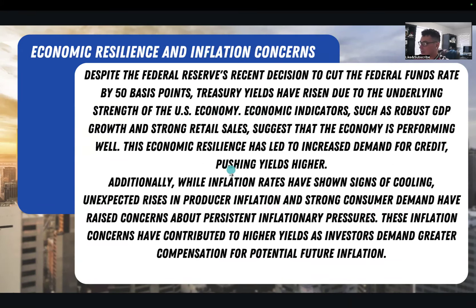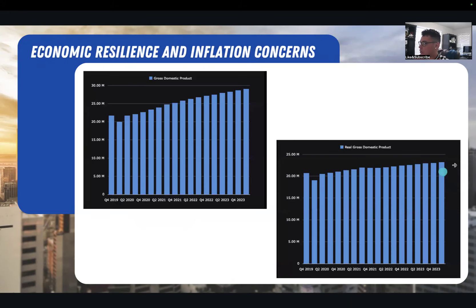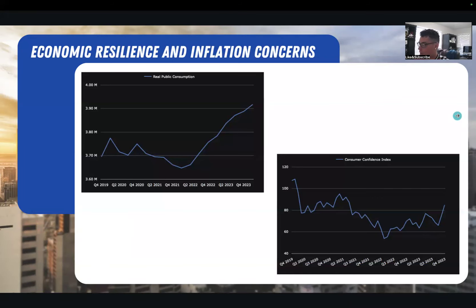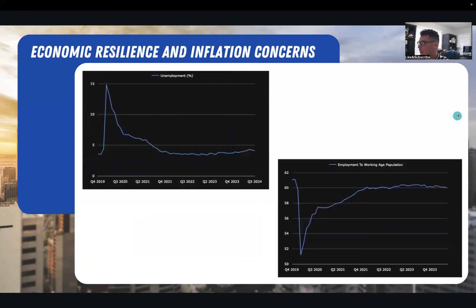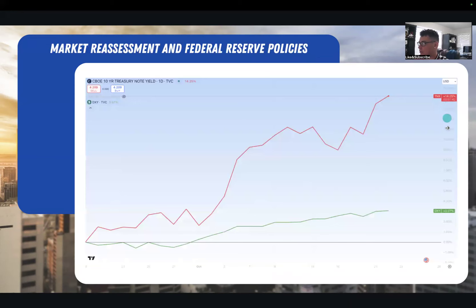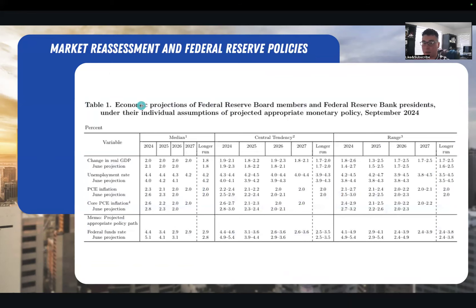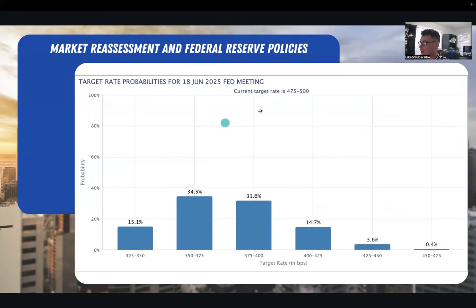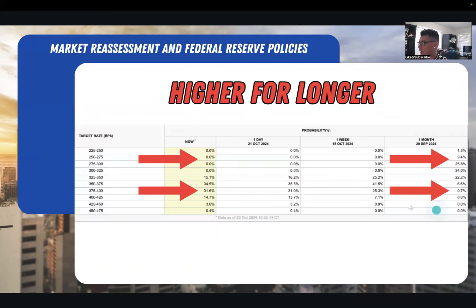We'll dive into economic resilience and inflation concerns, showing some charts and data to back things up. We'll look at what the market is looking at in terms of the market reassessment in Federal Reserve policies. We'll look at the spike in the 10-year treasury yields and the dollar, talk about the SEP — the summary of economic projections — and where the probabilities currently are. There's been a very dramatic difference in where rates were projected to be versus one month ago.